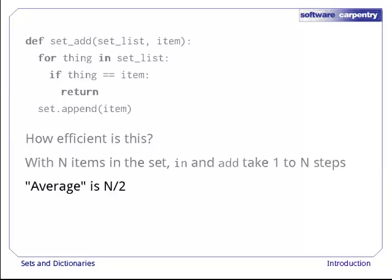With a bit of hand-waving, we can say that the average time to do something with an N element set would be N over 2 steps.